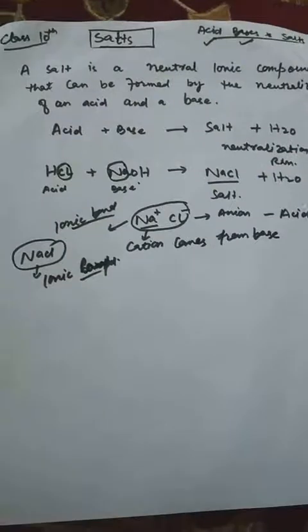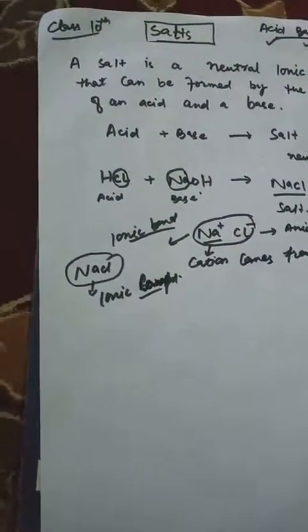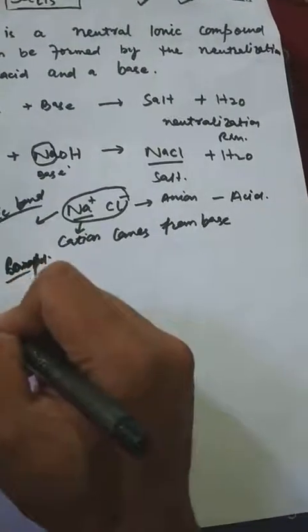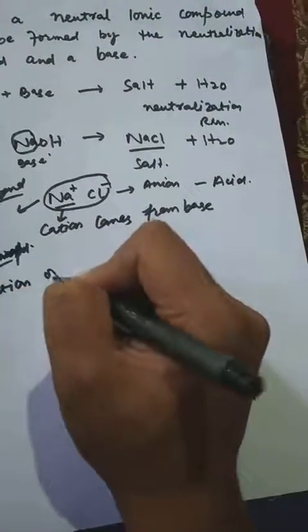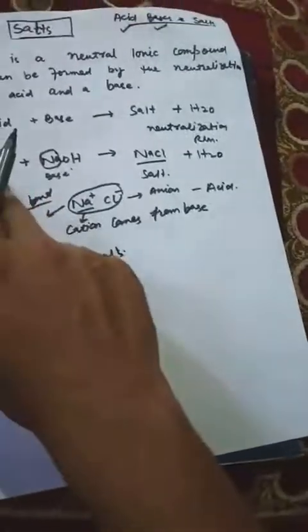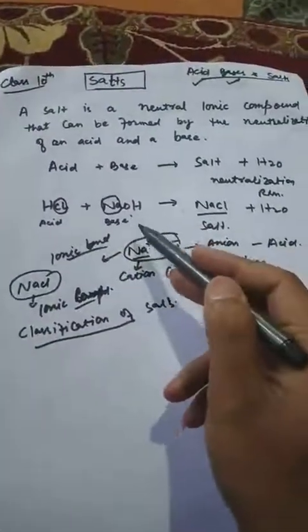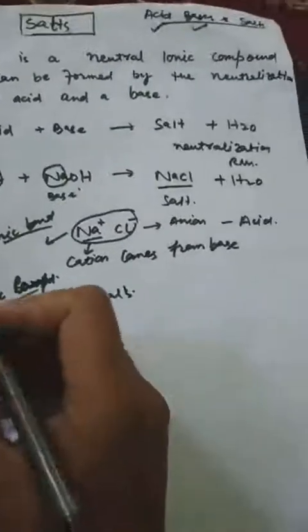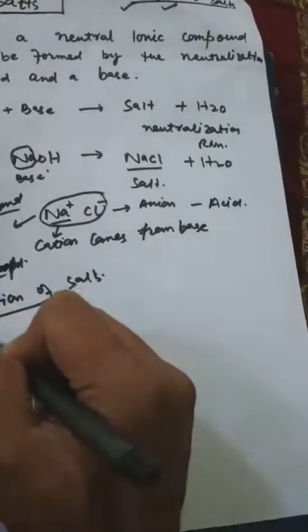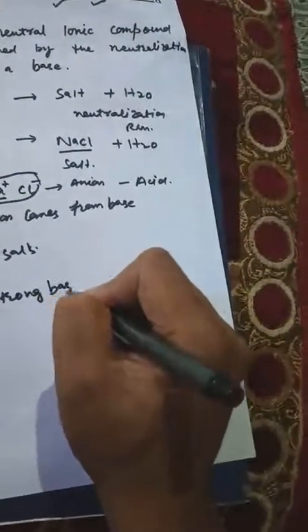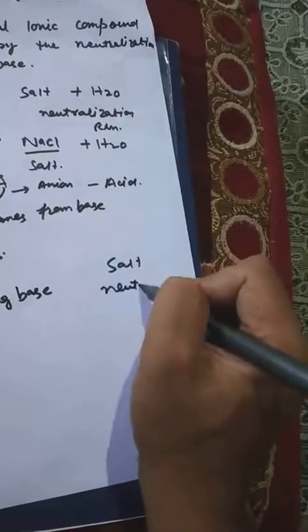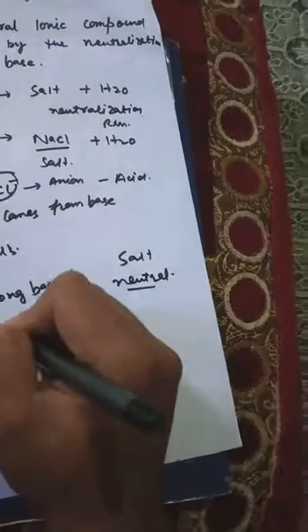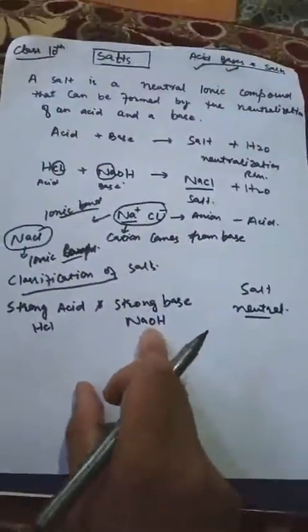Now remember: when a salt is formed, the nature of the salt depends on the strength of the acid and base used. If a strong acid and a strong base are used, the salt formed will be neutral.